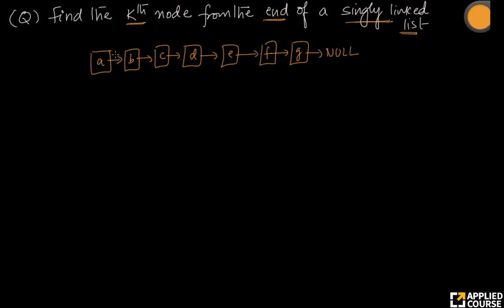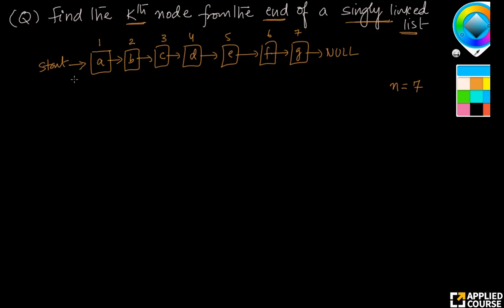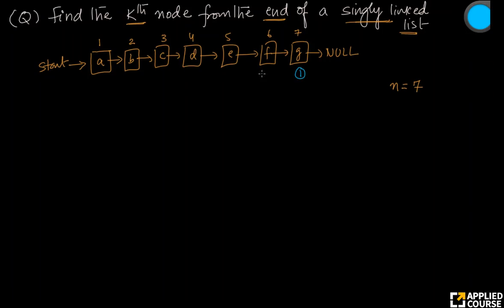Let us understand the example. Let us count. This is my head, the start of the linked list. So this is at first position, second, third, fourth, fifth, sixth, and seventh. How many elements do I have? Let us call that n. So n equals seven. Let me also count from the end: this is the first node from the end, second, third, fourth, fifth, sixth, and seventh. Imagine if k equals three — it is asking us to find the third node from the end, which means it is asking us to find this node.